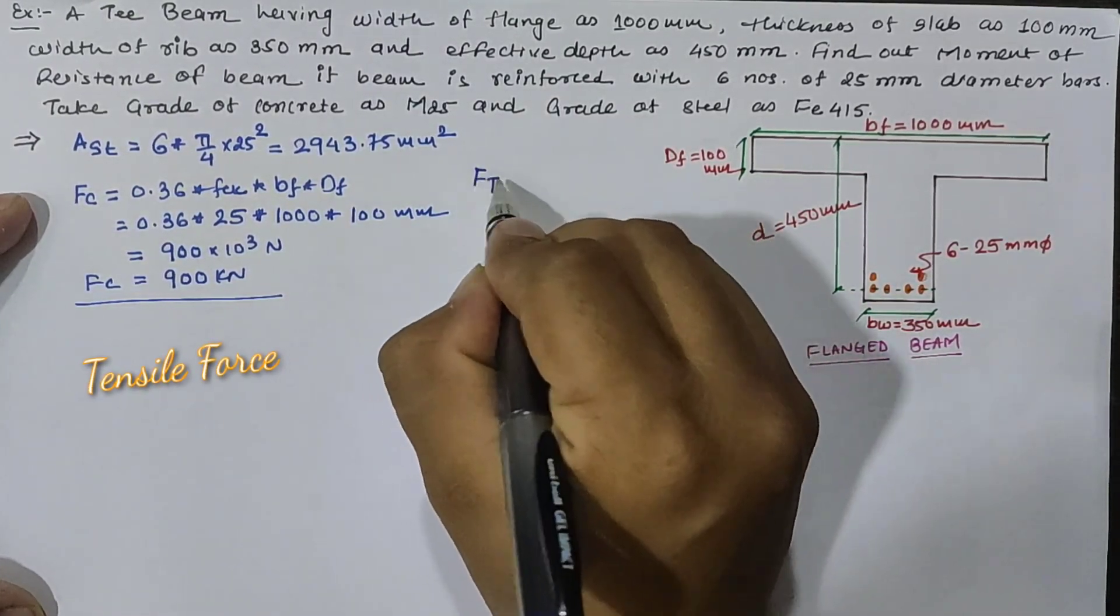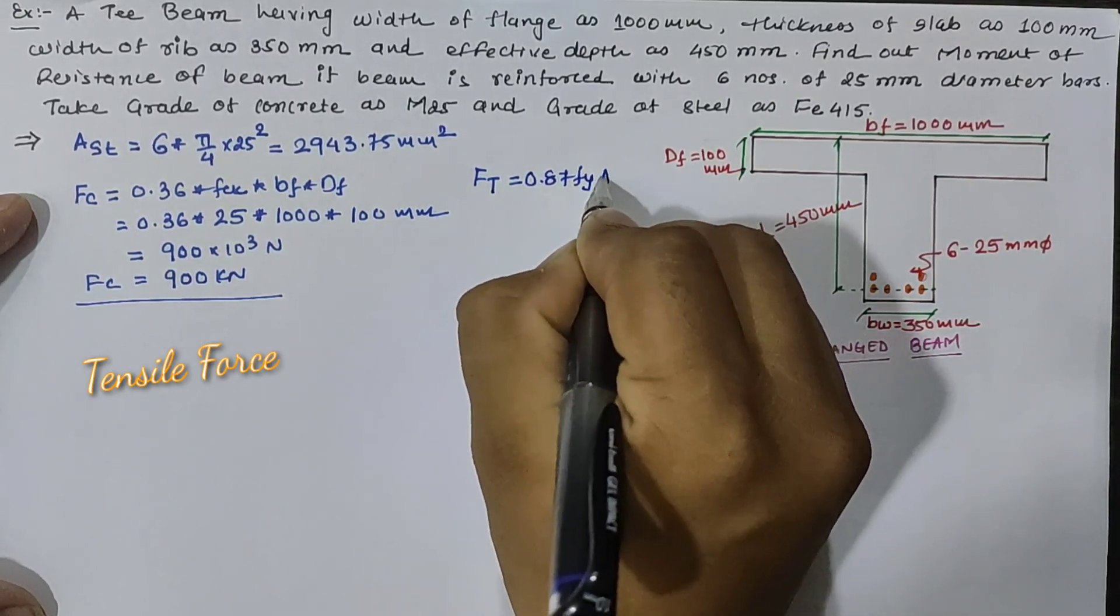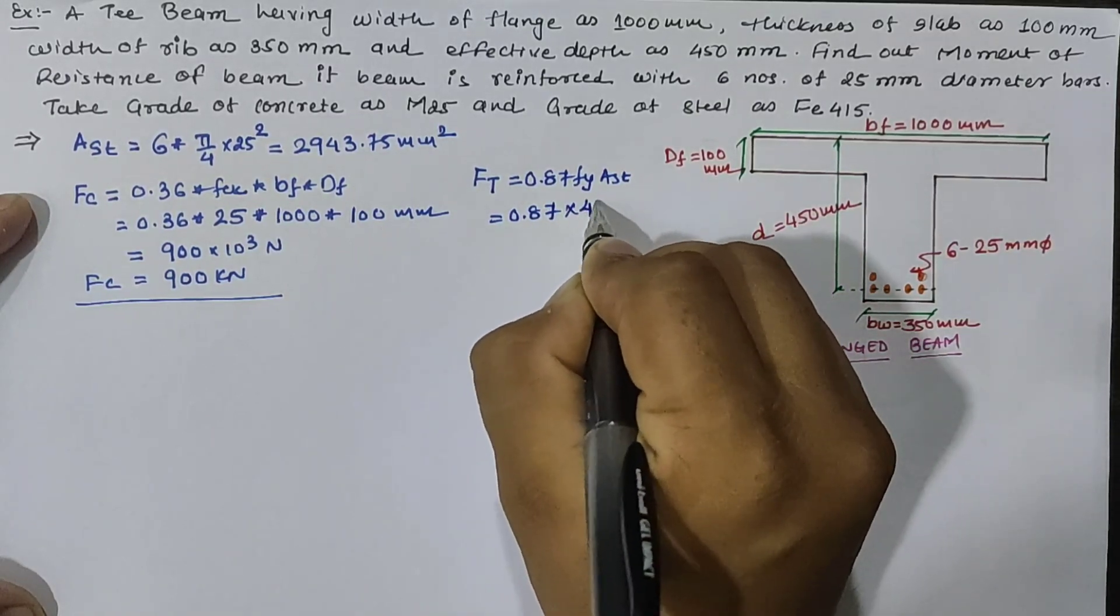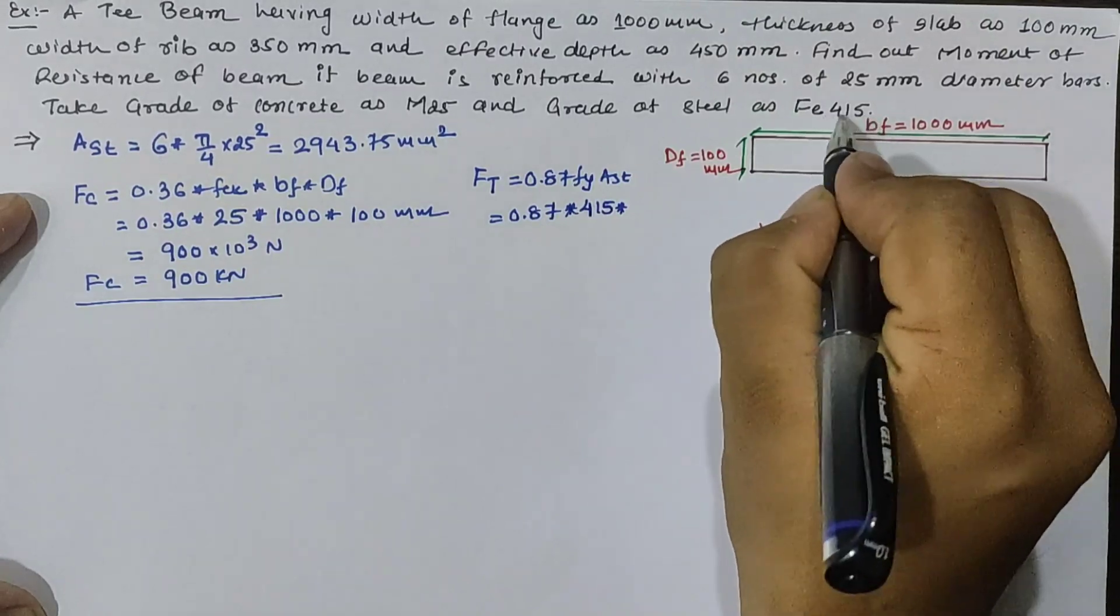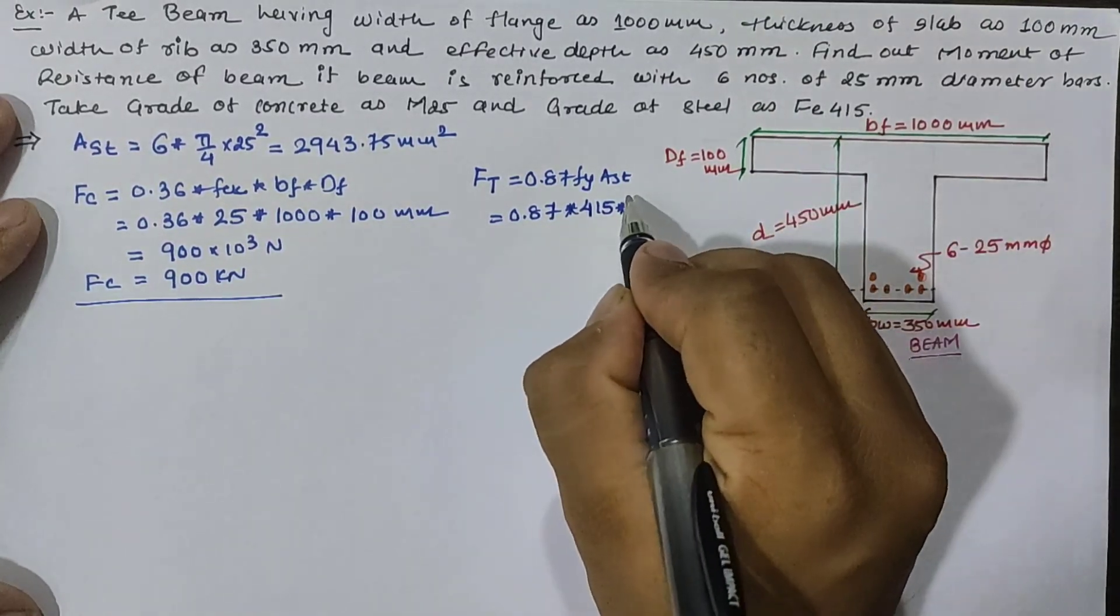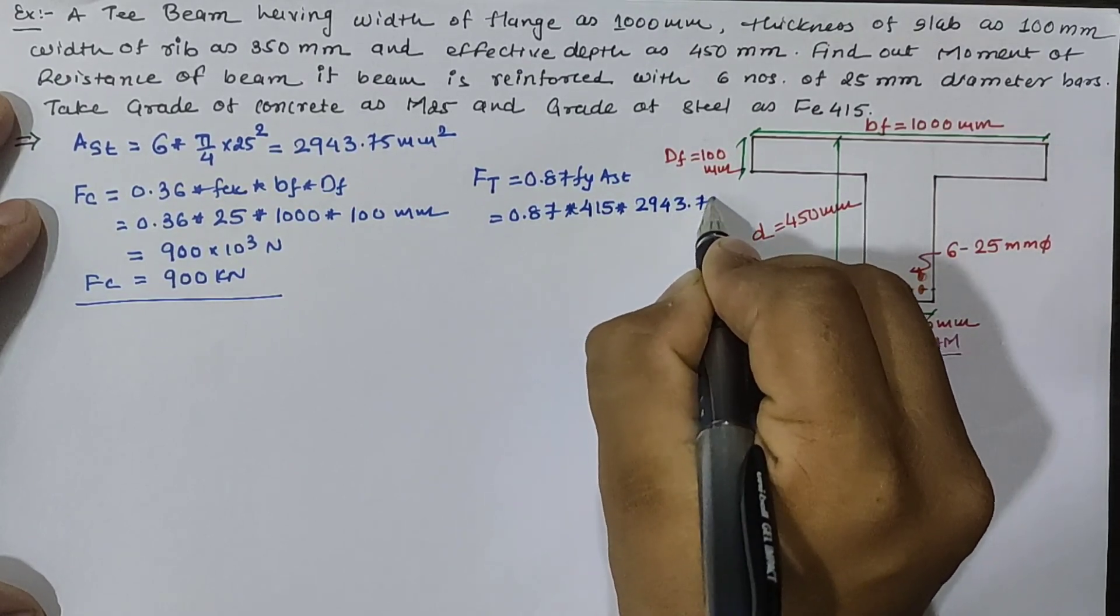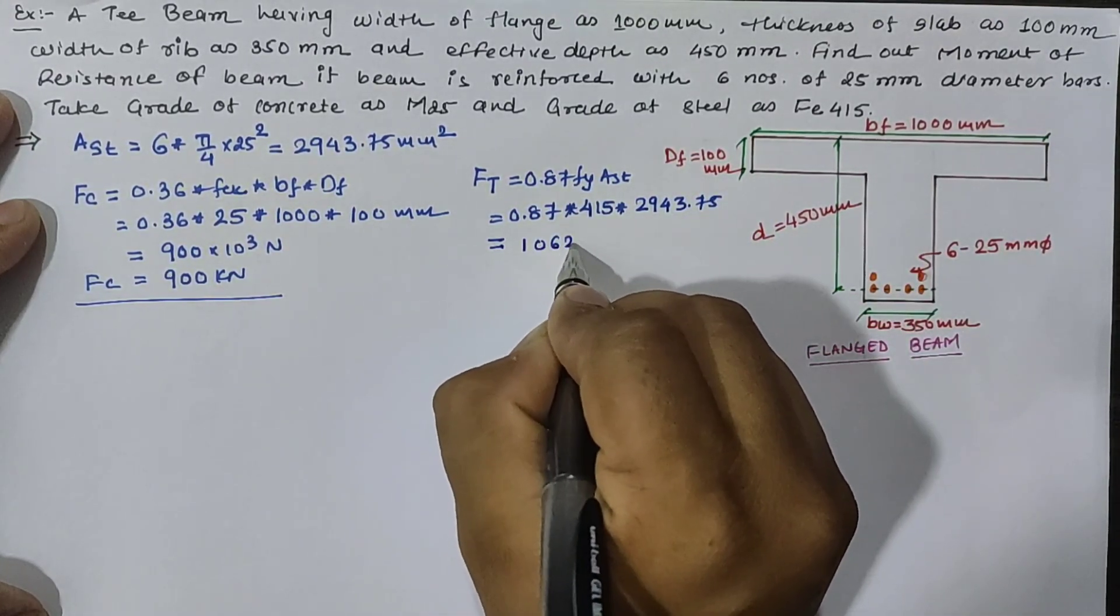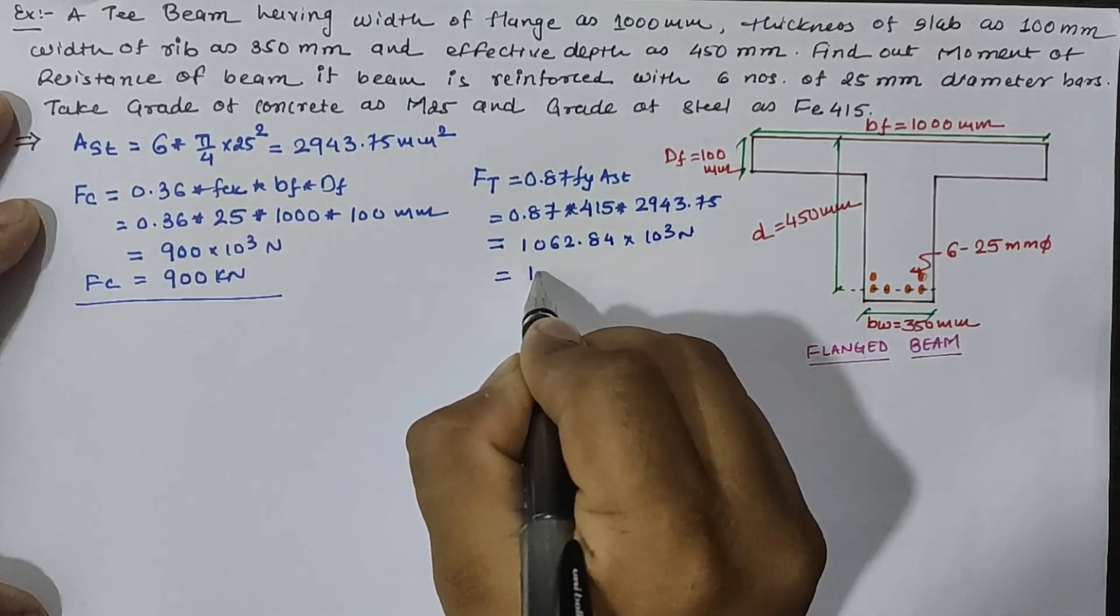Similarly we can calculate tensile force from equation 0.87 fy into Ast, where 0.87 is constant, fy is 415 N/mm² as Fe415 grade of steel is given, and area of steel provided is 2943.75, which is equal to 1062.84 kN.